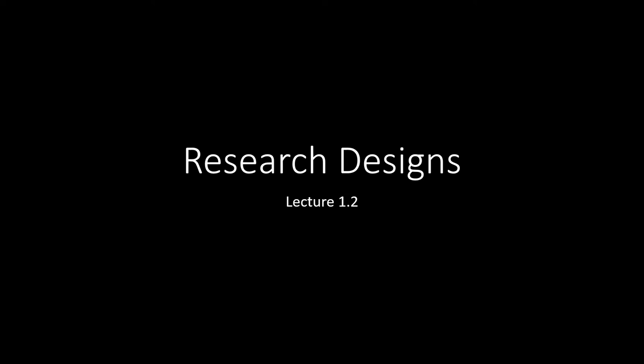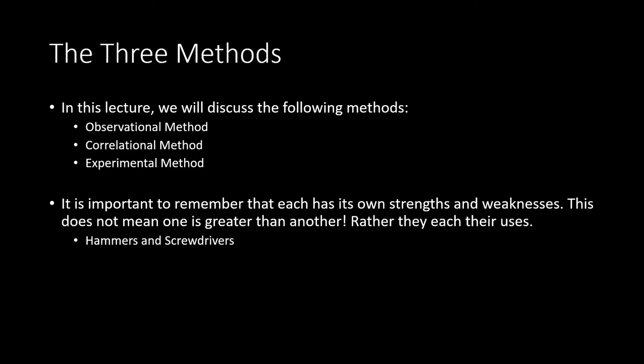This is the second portion of the first lecture, in which we will talk about various research designs. The three different scientific methods or research designs that we will talk about in this lecture are as follows: the observational method, the correlational method, and finally the experimental method.